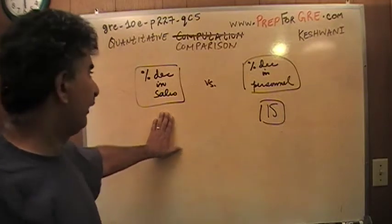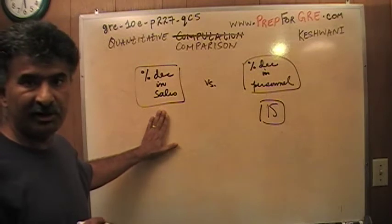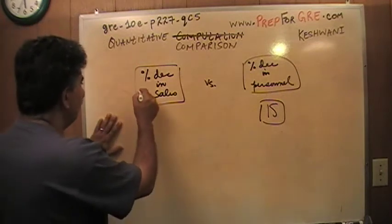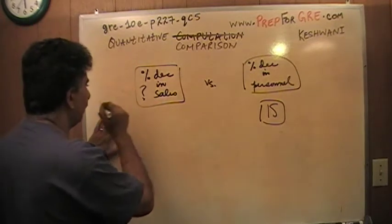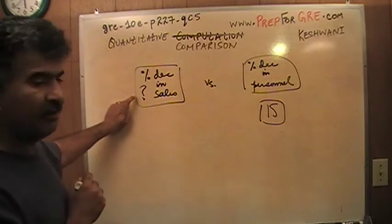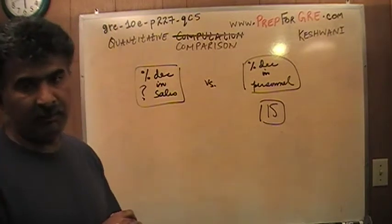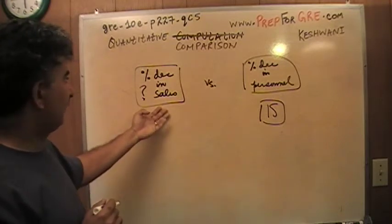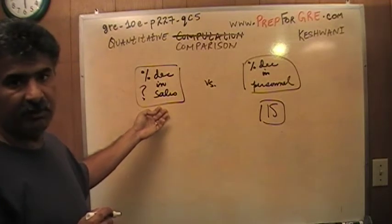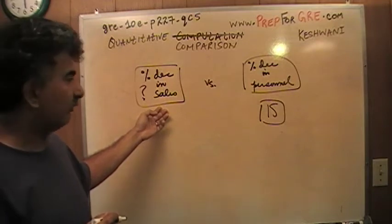There is not enough to figure out this quantity, the percentage decrease in the sales. This quantity is one black box, it is an unknown quantity. So basically we are being asked to compare an unknown quantity with 15. It cannot be done. The percentage decrease in the sales may be 15%, it may be less than 15%, it may be more than 15%, who knows?